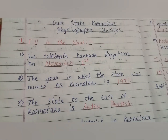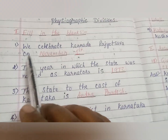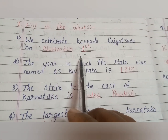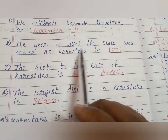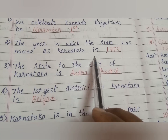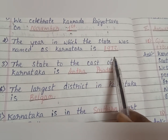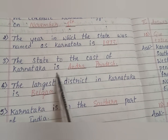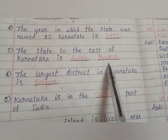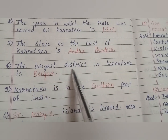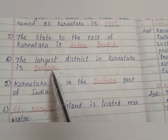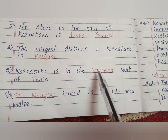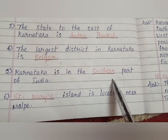The first section is fill in the blanks. First question: we celebrate Kannada Rajyotsava on — answer is November 1st. Second one: the year in which the state was named as Karnataka is — it is 1973. Third question: the state to the east of Karnataka is — answer is Andhra Pradesh. Fourth one: the largest district in Karnataka is — answer is Belgam.